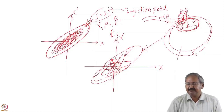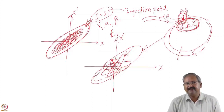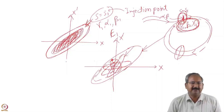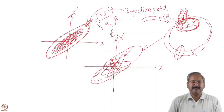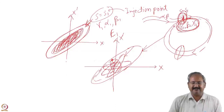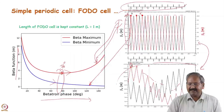In the matched solution, the beam size may have different values at different locations but will remain fixed on each turn at a given location. In the mismatched solution, even at a certain location the beam size will not remain fixed on each turn. This is the problem with the mismatched solution. So we always have to find a periodic solution and try to match the beam ellipse with the optics ellipse, so we have a matched beam inside the accelerator.